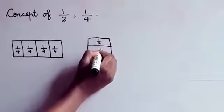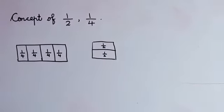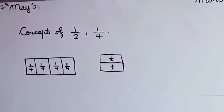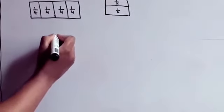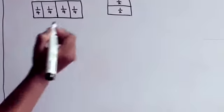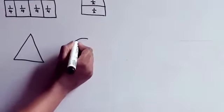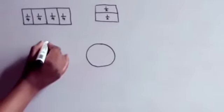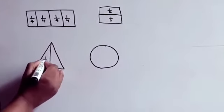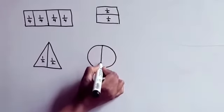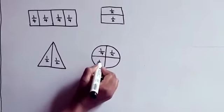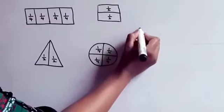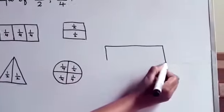So each part is called one half. Do you understand? We'll draw different pictures and you're going to divide it into halves and quarters. This is a triangle — make a circle with something. We'll divide it into four equal parts — one quarter.